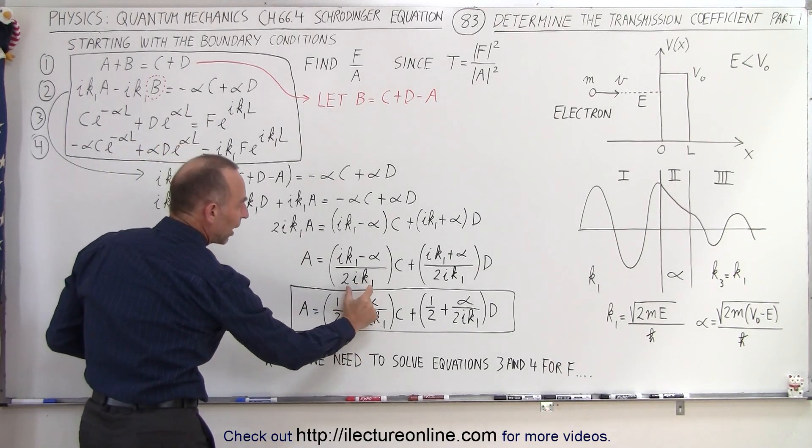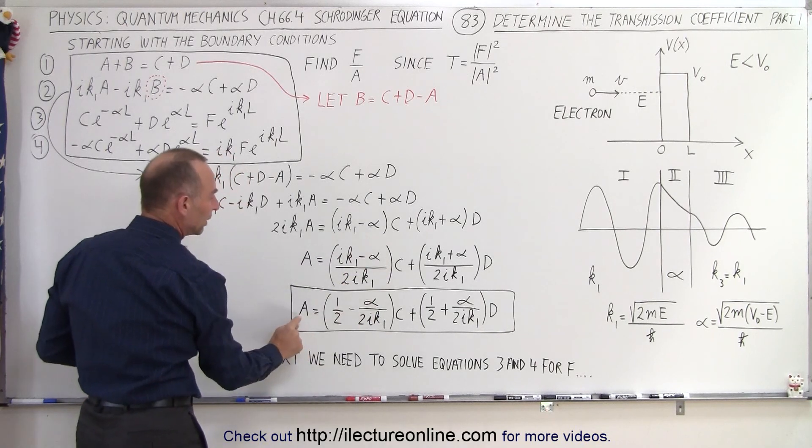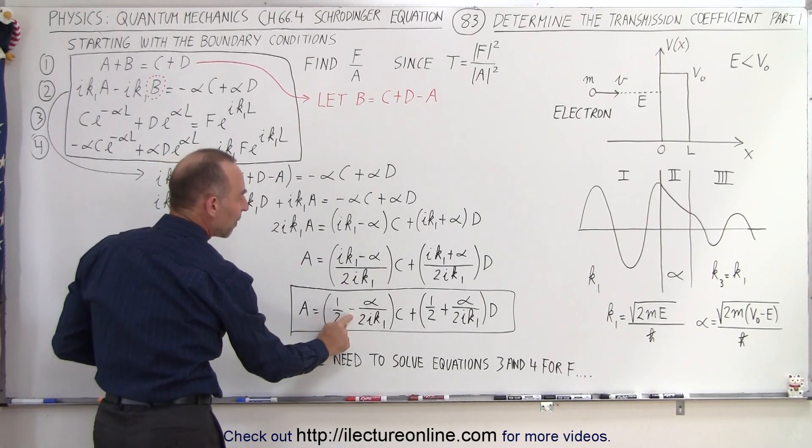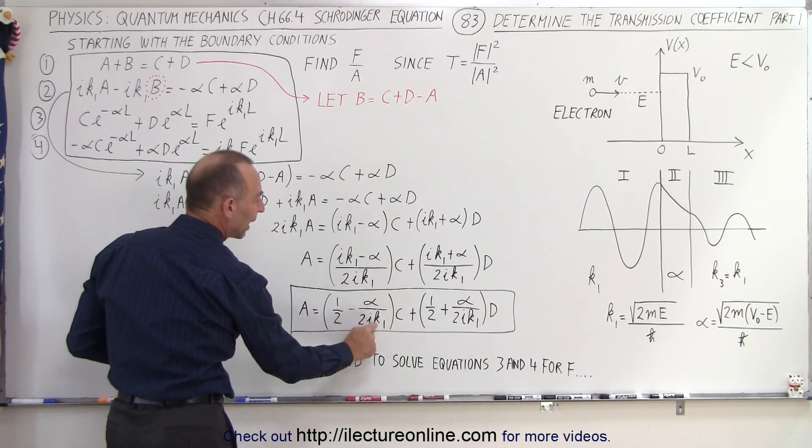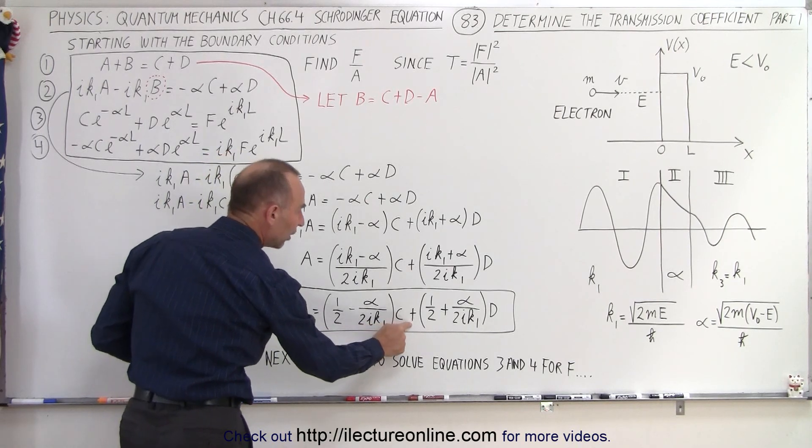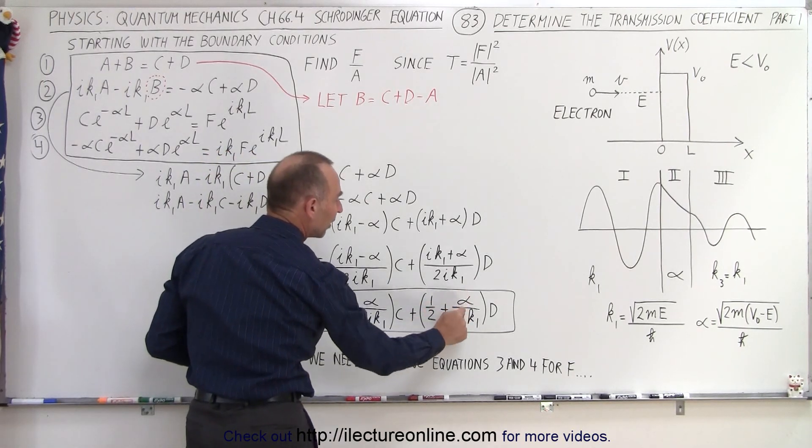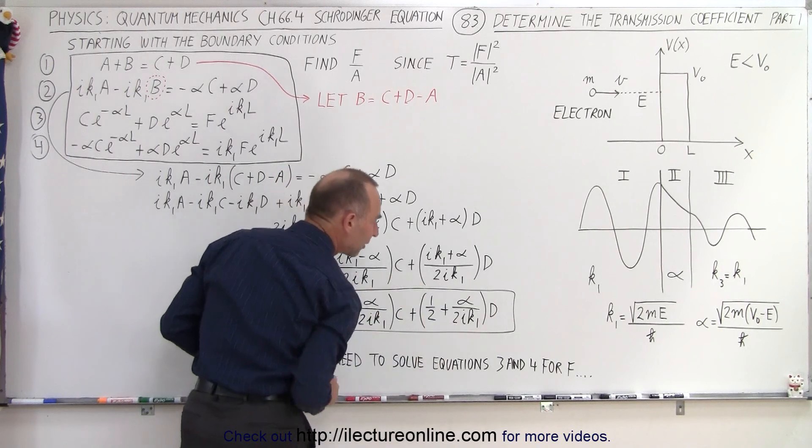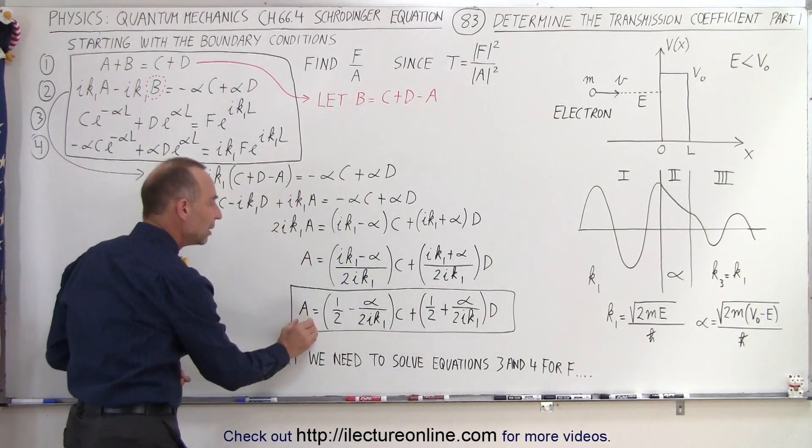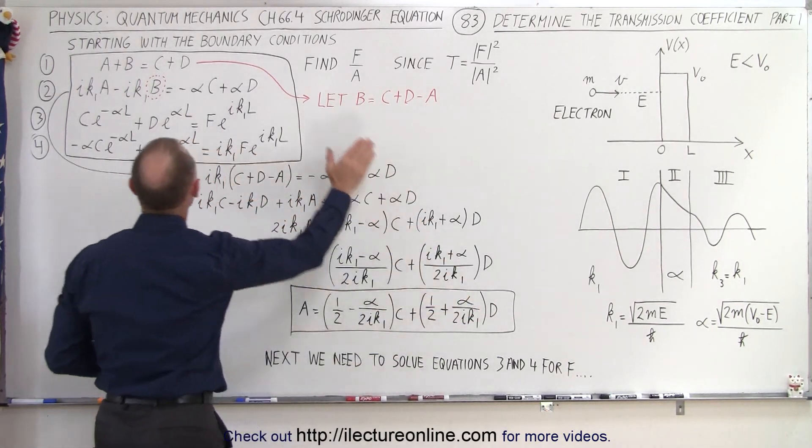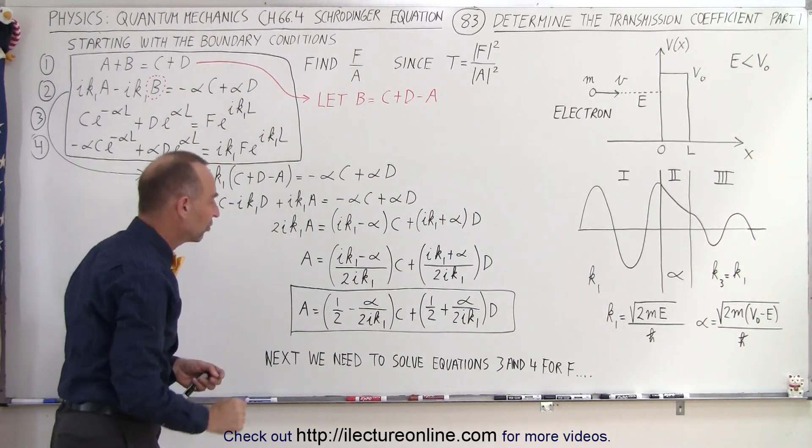Then if we divide that denominator into the numerator, we end up with a is equal to 1 half minus alpha over 2i k1 times c plus 1 half plus alpha over 2i k1 times d. So now we have a in terms of c and d, and we've eliminated the constant b.